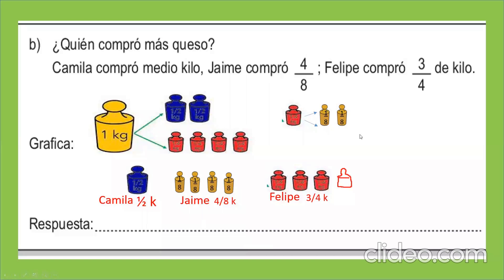Tres cuartos de queso. Pero nos preguntan: ¿quién compró más queso? Al juntar dos partes de medio kilo en medio kilo, nos da un kilo. Entonces decimos que el que compró más queso fue Felipe.